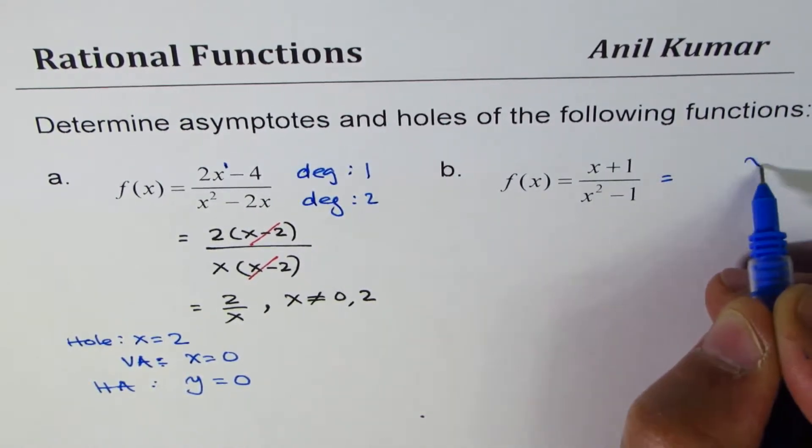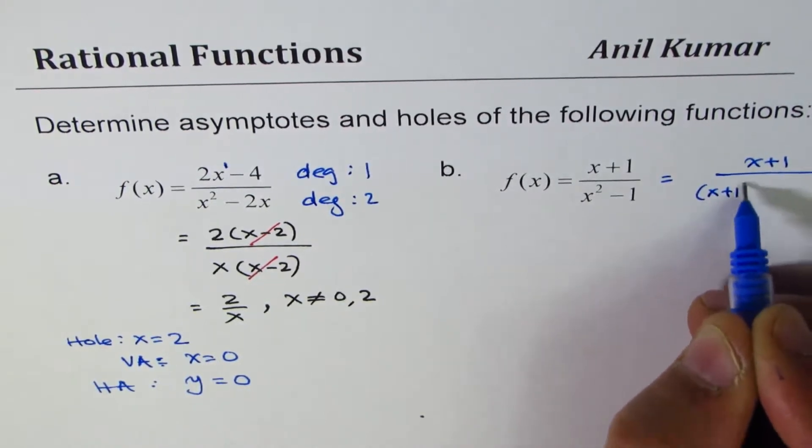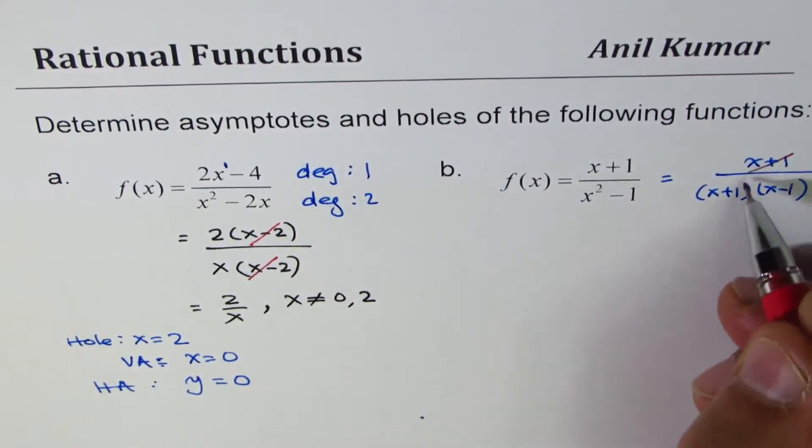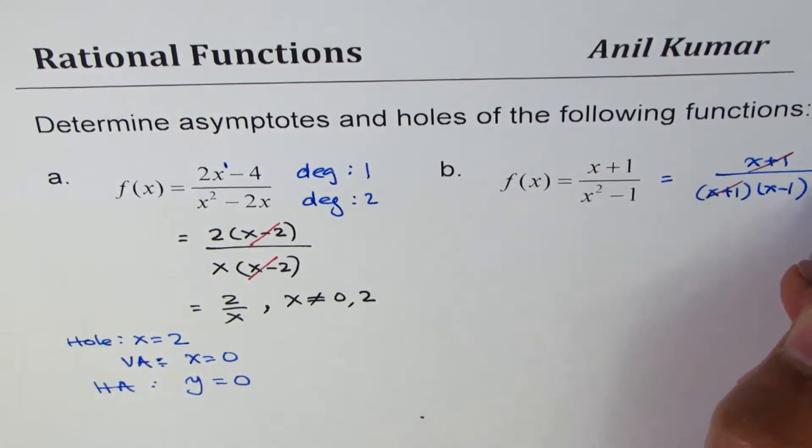We could factor this as x plus 1 divided by difference of squares: x plus 1 times x minus 1. The factor x plus 1 cancels. And of course the restriction here is x is not equal to plus or minus 1.